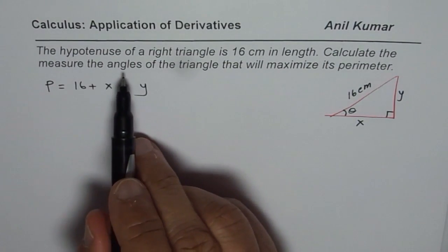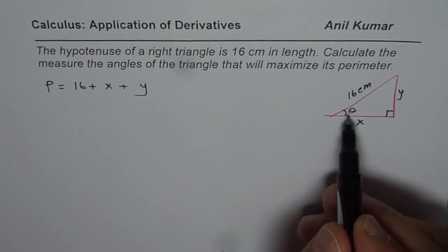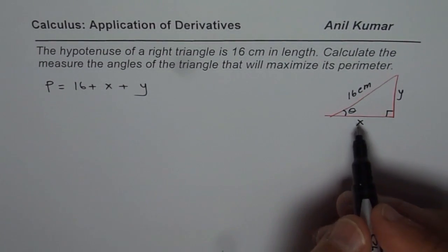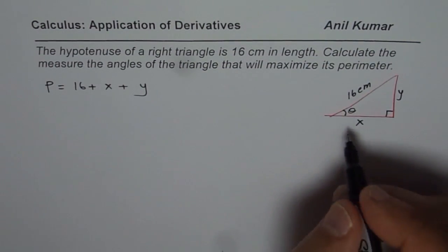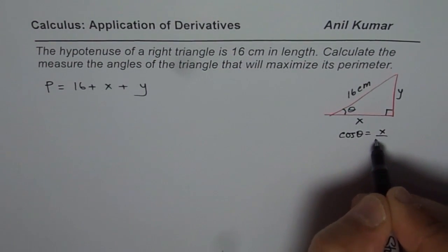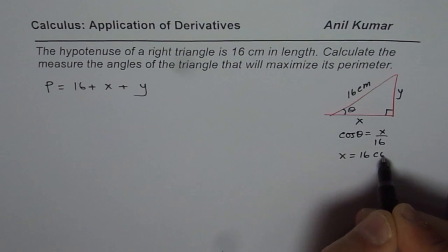Since we need to maximize the angle, we should actually write x and y in terms of the angle itself. So, cos of theta is x over 16. We have cos theta equals to x over 16 and that means x is equals to 16 cos theta.